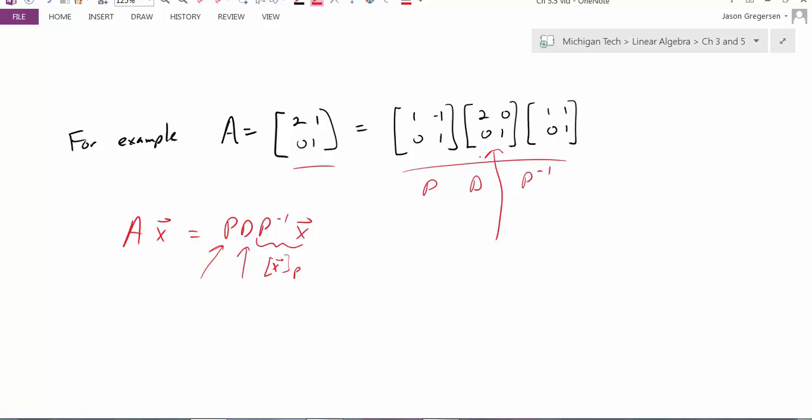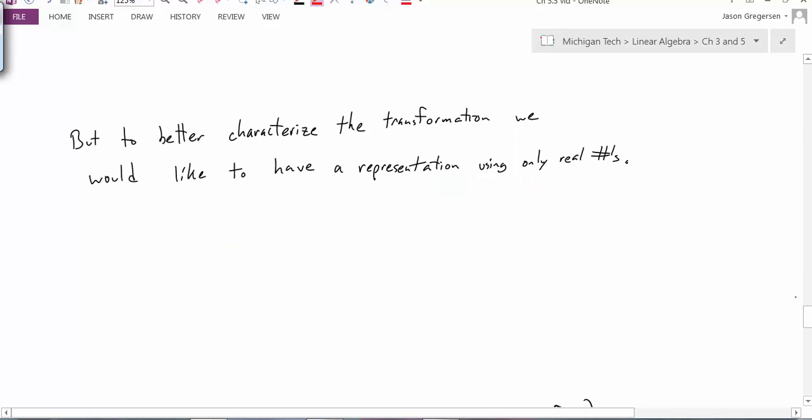I would like to think about my complex diagonalization, or whatever we're going to call it, in the same similar way though. The problem is I need to work with real values instead of complex values. So in other words, to summarize, to better characterize my transformation, I would like to have a representation that used only real numbers. So how would I go about doing that?